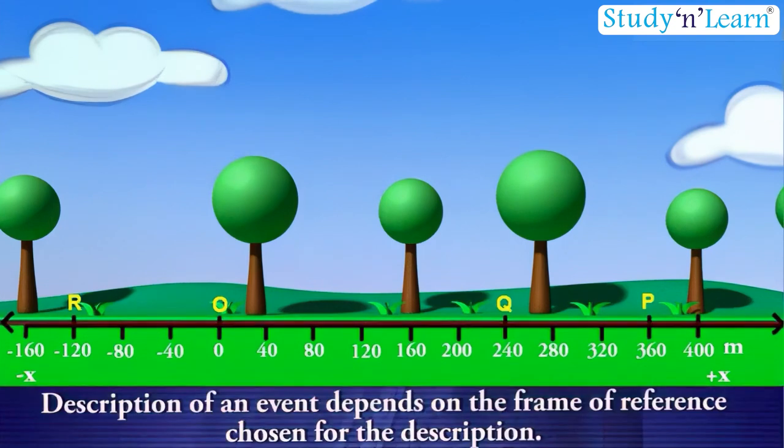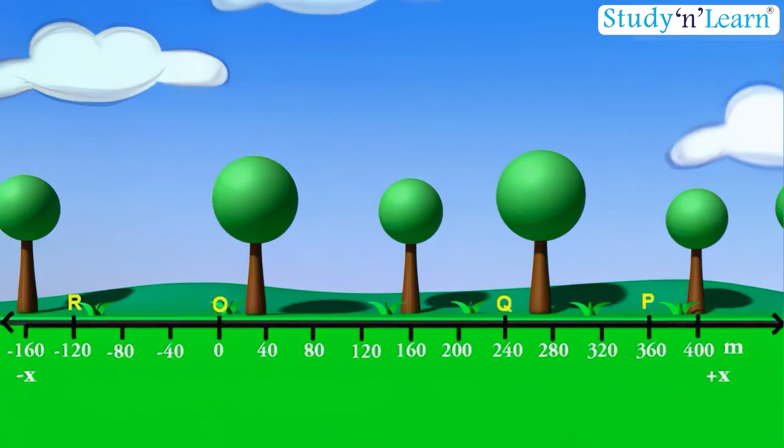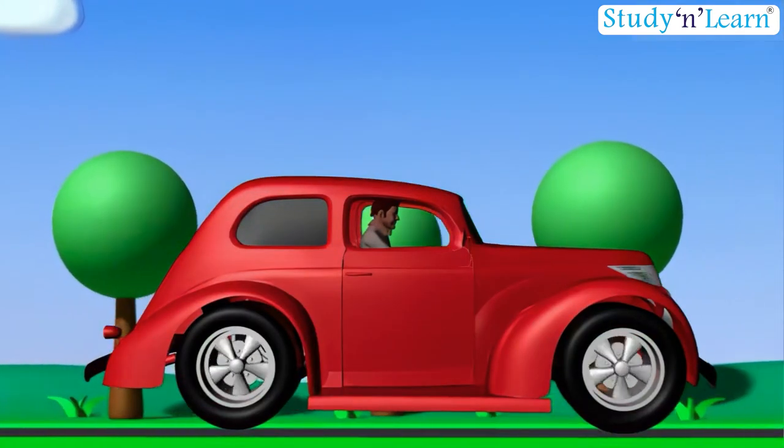Description of an event depends on the frame of reference chosen for the description. For example, when you say that a car is moving on a road, you are describing the car with respect to a frame of reference attached to you or to the ground. But with respect to a frame of reference attached with a person sitting in the car, the car is at rest.